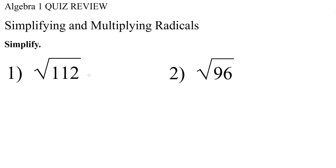Now, if you don't know the factors of 112, you can divide, but remember, I'm not allowing a calculator on this quiz, so you'll have to do that by hand. Or you could do some prime factorization. So that means we're going to take 112 and break it into all the possible prime numbers. 112 is even, so let's divide it by 2. 112 divided by 2 is 56, and 2 is a prime number, so we're going to stop there.